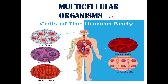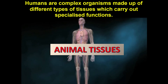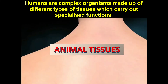In human beings, there are trillions of cells, each with their own structure and function. There are over 200 different types of cells in the human body, and each type is specialized to carry out a particular function, either solely or by forming a particular tissue. During development, cells differentiate to become nerve cells, skin cells, muscle cells, blood cells, and other cell types. Humans are complex organisms made up of different tissues that carry out specialized functions.